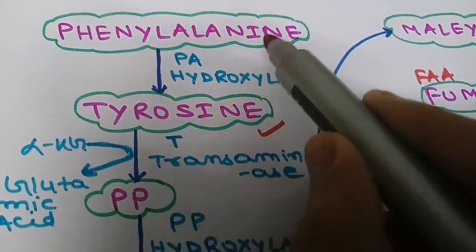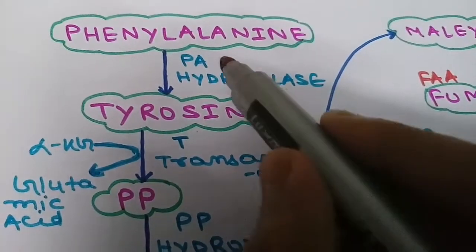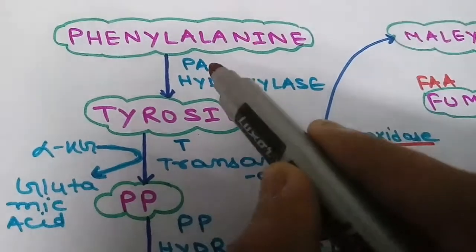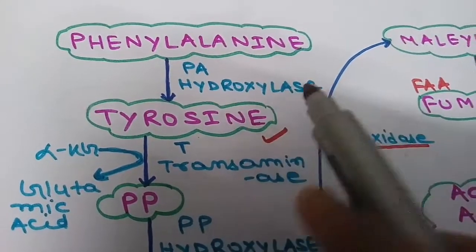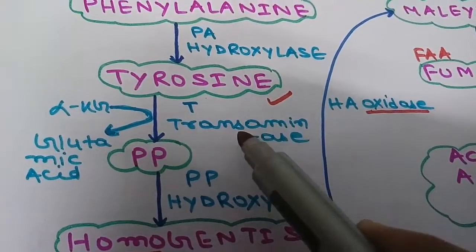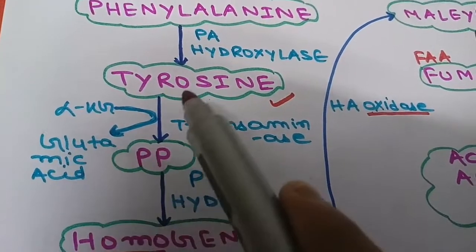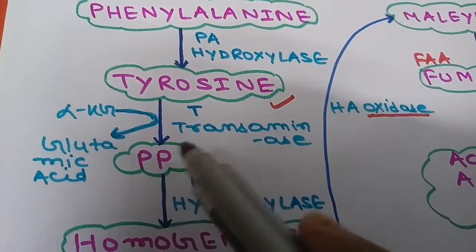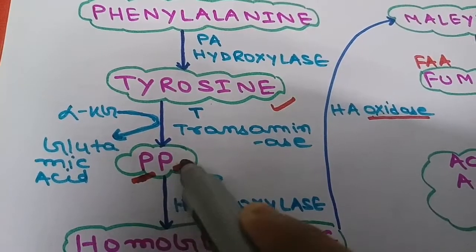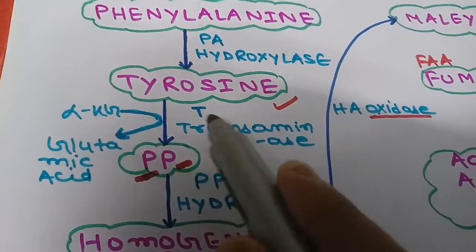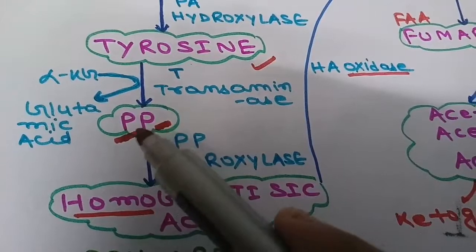Today we are going to discuss the catabolism of phenylalanine. Phenylalanine after hydroxylation will form tyrosine — the enzyme in the first step is phenylalanine hydroxylase. After this, transamination will occur: alpha-ketoglutarate, after taking ammonia from tyrosine, will form glutamic acid, and this tyrosine will convert into para-hydroxyphenylpyruvic acid. The enzyme here is transaminase.